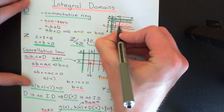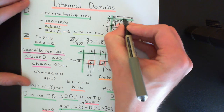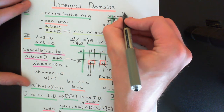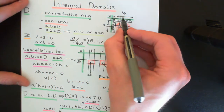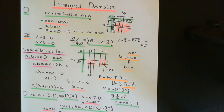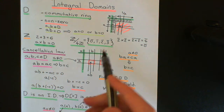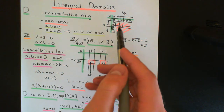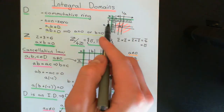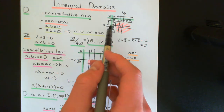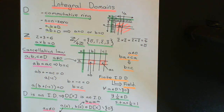Since we have a finite number of elements and exactly the right number of slots in this row, every element must appear once. In particular, 1 must appear at some point. Then you just ask: what is it that I multiply with a to get 1? That will be the multiplicative inverse for a. So there must exist some element which multiplies with a to give 1 in a finite integral domain, and that element is the multiplicative inverse of a.